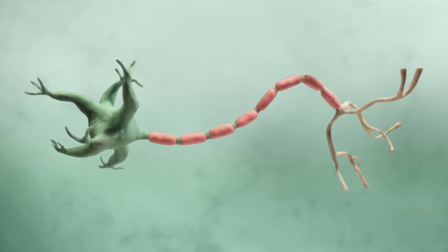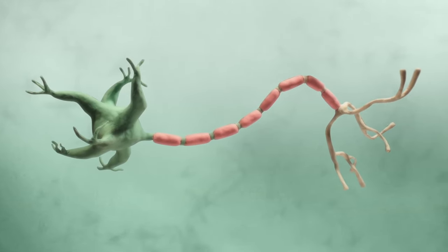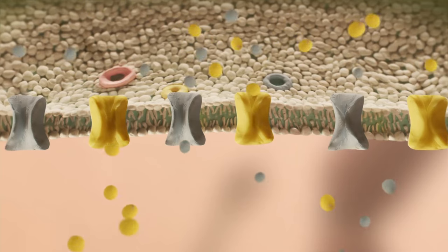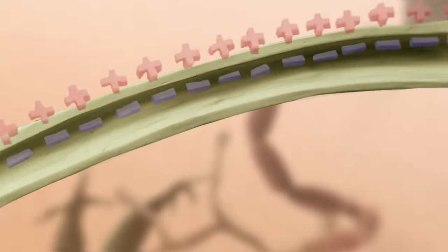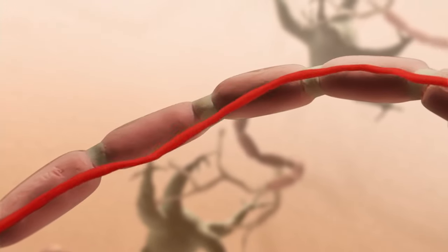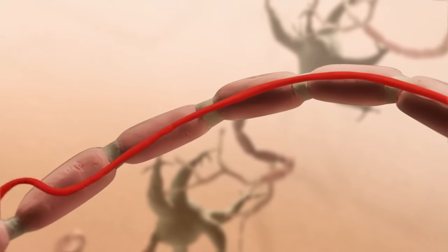In the last module, we took first steps towards understanding the electrical properties of individual neurons. We learned how electrical forces and diffusion give rise to membrane potentials, and how cells can generate and propagate signals called action potentials, or spikes, along the membrane.